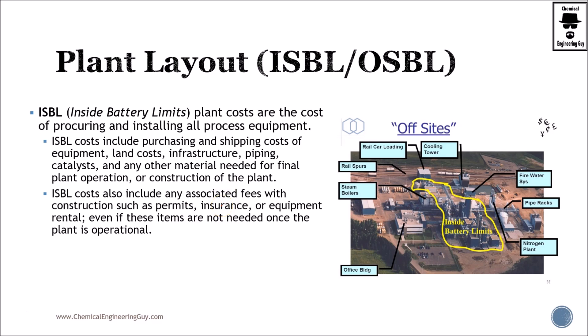So let's check out more technically what is ISBL. It's also about pricing and cost. So what will be the plant cost or the installment of unit operation and so on. So ISBL, if you're talking about plant investment, will include purchasing and shipping cost of equipment, land cost, infrastructure, piping, catalyst, and any other materials needed for final plant operation. Of course, the raw materials can be assumed as inside battery limits. ISBL cost also include any associated fees with construction, such as permit insurance, equipment rental, and anything required for plant operation.